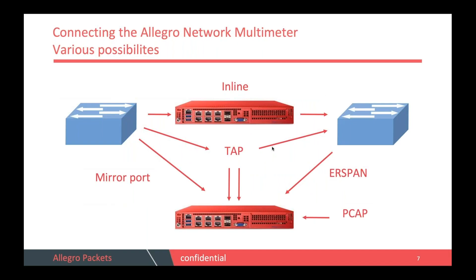We also thought about how to install the Allegro in the best way. The easiest method is inline, which we always recommend when you have an access point or one client PC or VoIP phone and the downtime of the link is not an issue. In a productive network, we recommend using a tap, which copies packets with no influence on the network. Many customers start with a mirror port or ERSPAN. We also accept PCAP files for historic capture reanalysis.